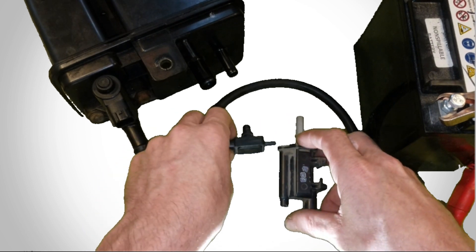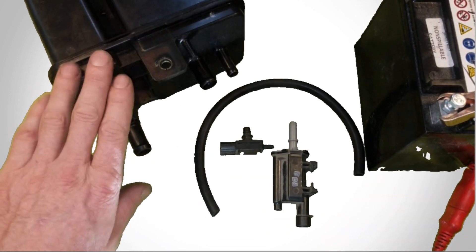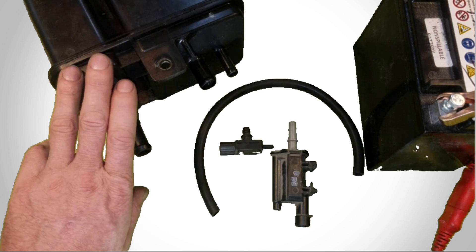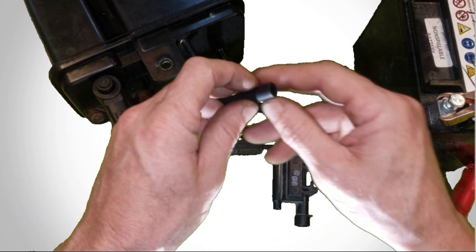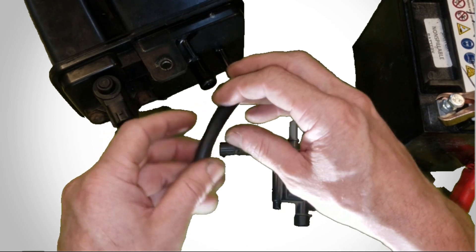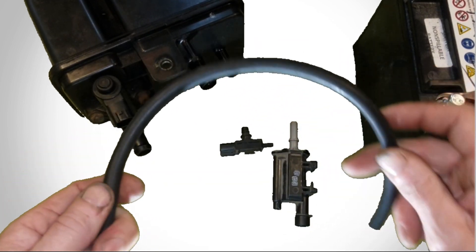So if your vent valve isn't shutting then it's definitely going to set a large leak code. If you've got a cracked vacuum line or something, in most cases usually it's going to set a smaller type of leak code.